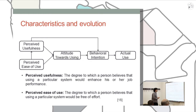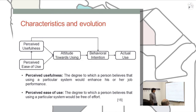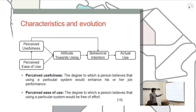When Davis designed his model, he wondered which elements could influence the actual use of an information system. He proposed two key concepts: perceived usefulness, which is the degree to which a person believes that using a particular system could enhance their performance; and perceived ease of use, which is the degree to which a person believes a particular system would be free of effort. These two concepts influence attitude toward using, which influences behavioral intention, which in turn conditions actual use. He also recognized the existence of external variables affecting these constructs, but did not specify them in his original model.